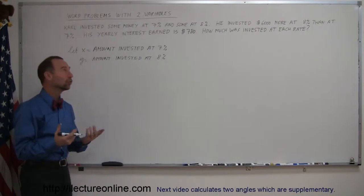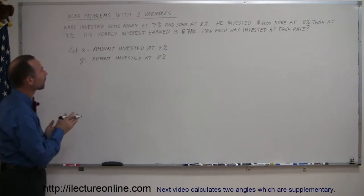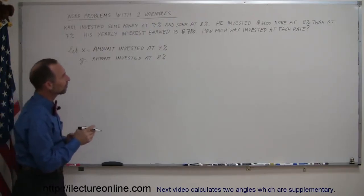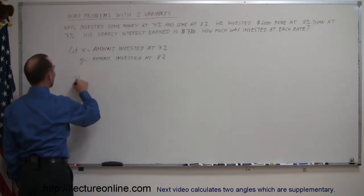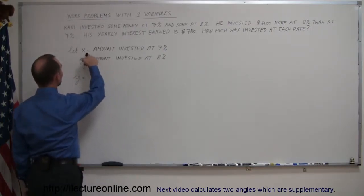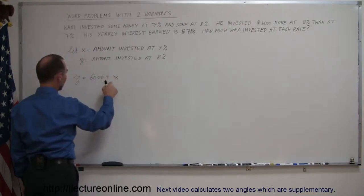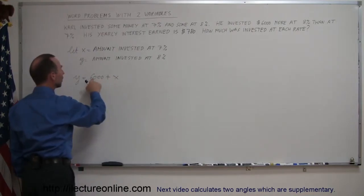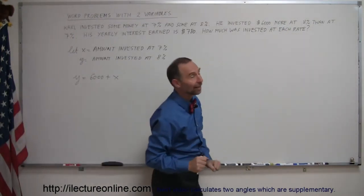Since you have two variables, you need two equations to solve this problem. Looking through the problem, it says we invested $6,000 more at 8% than at 7%. Since y is the amount invested at 8%, we can say y equals 6,000 plus x — whatever we invested at x, add $6,000, and that's what we invested at y. That captures that information.